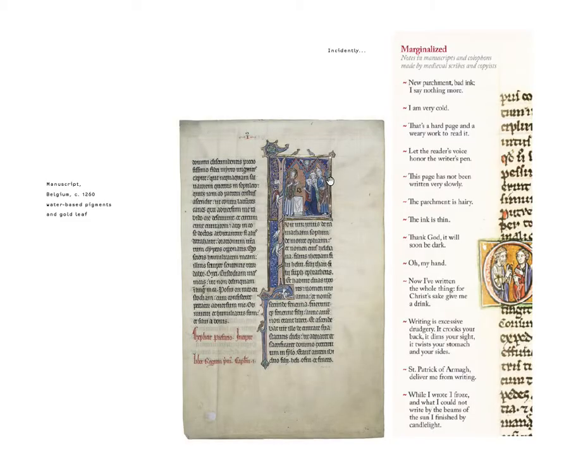To give some context for Roman type, thinking about the Gutenberg press and the culture it was responding to: on the left here you see a manuscript from Belgium in 1260, using water-based pigments and sometimes gold leaf decoratively. The material it's printed on is vellum — a very thin animal skin — which is not really as efficient as paper. Paper begins to make its way into Europe more commonly around this time, which sets a stage where printing can begin to occur.